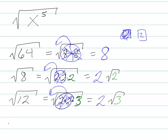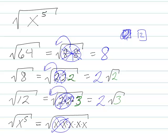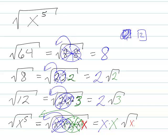Going back to our problem: the square root of x to the fifth. I've got 5 x's. I've got a pair of x's — this pair comes out. I've got another pair of x's — this pair comes out. And then I've only got one x left. So I have two x's that came out and one x left inside, giving x squared times the square root of x.